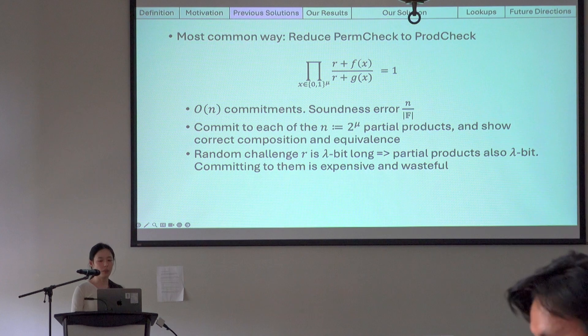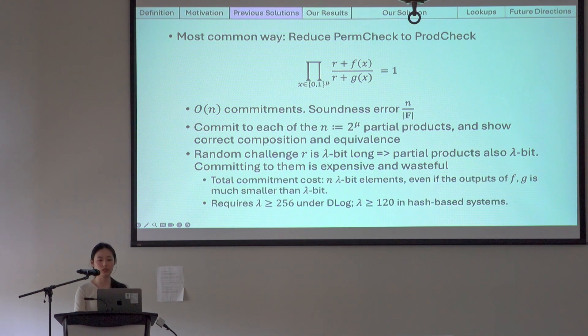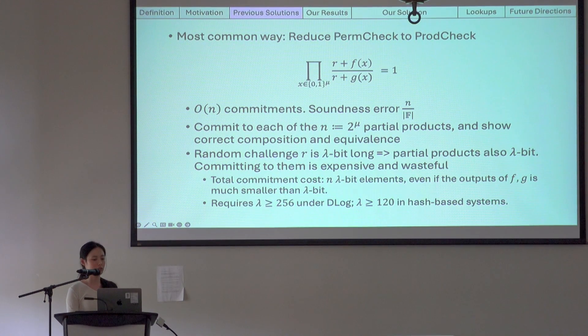Notice that because the random challenge r is field size, which means lambda bits, the partial products are also lambda bit long. So committing to them is expensive and can be wasteful because we always need to commit to a total of n lambda bit elements, even if the outputs of f and g, which comprise the witness, is much smaller than lambda bit.